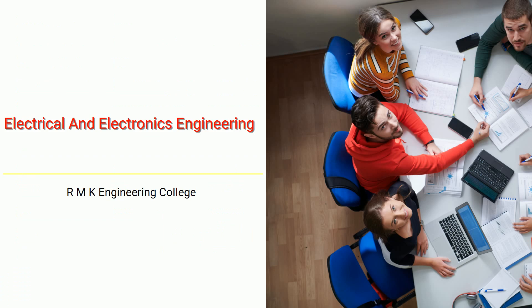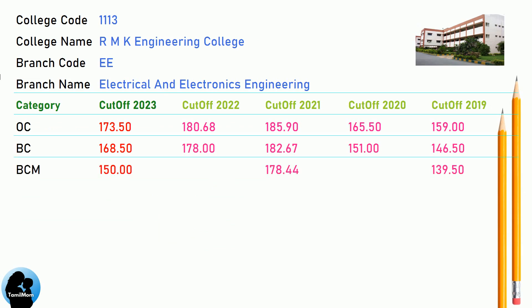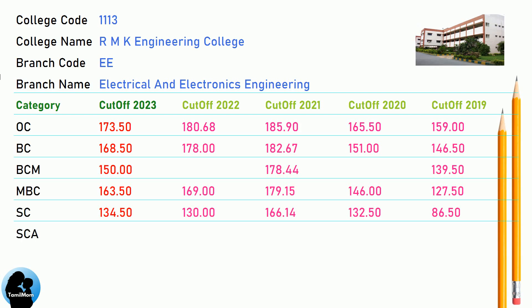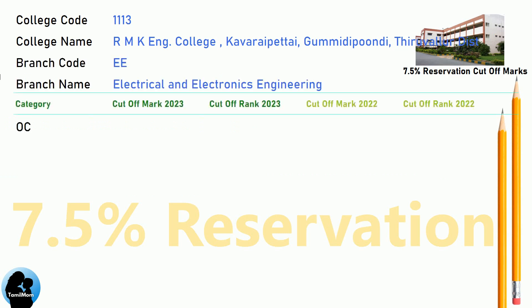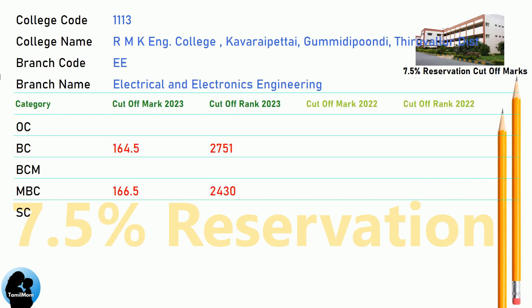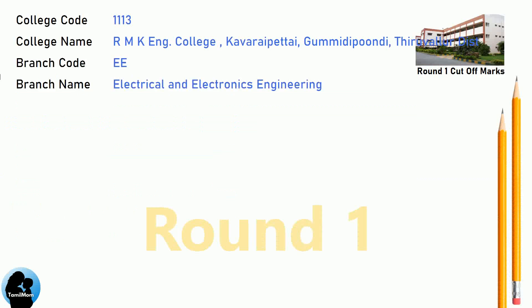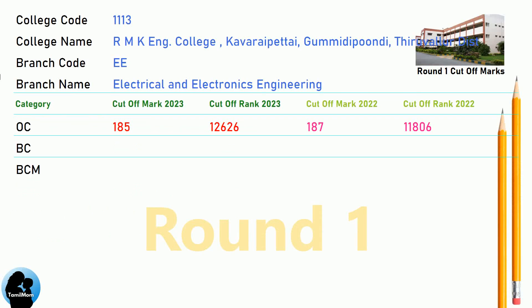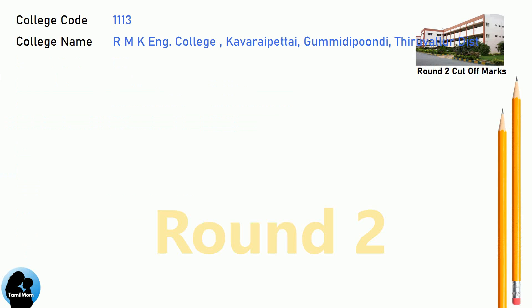DNEA Cut-off, DNEA 7.5 Reservation Cut-off, DNEA 9.5 Reservation Cut-off for RMK Engineering College in Electrical and Electronics Engineering.